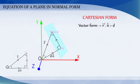Now, r vector is the position vector of the point P. Therefore, r vector is equal to x i cap plus y j cap plus z k cap.